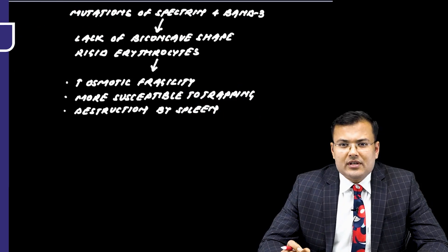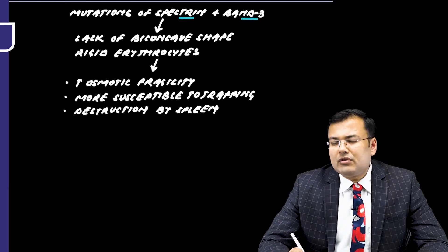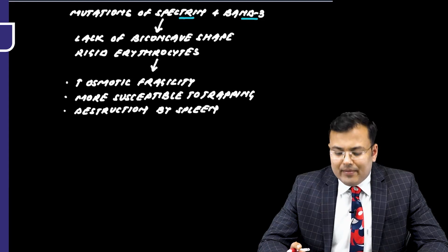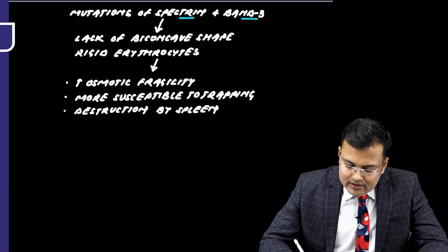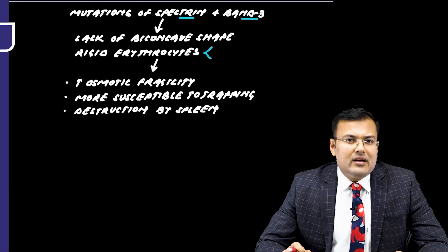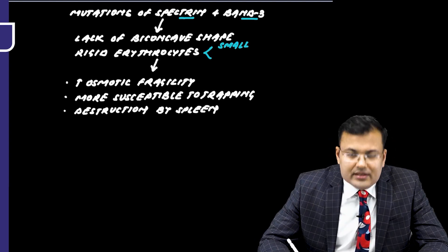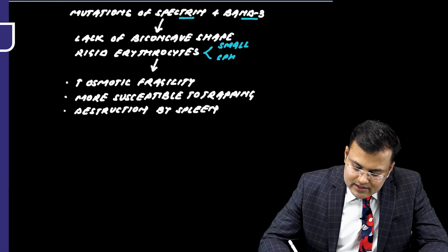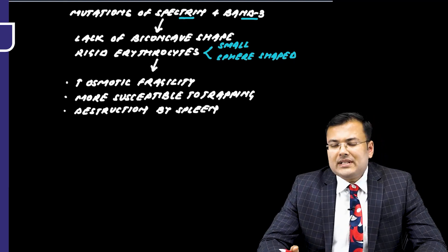Because of mutations in spectrin and band 3, there is a lack of the biconcave shape of RBCs, and RBCs become rigid. These rigid erythrocytes are small and sphere-shaped — hence the name hereditary spherocytosis.